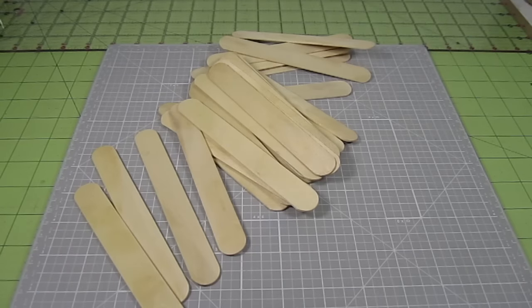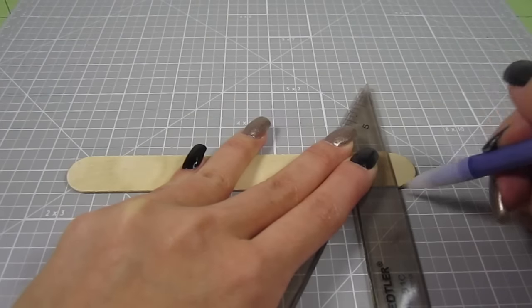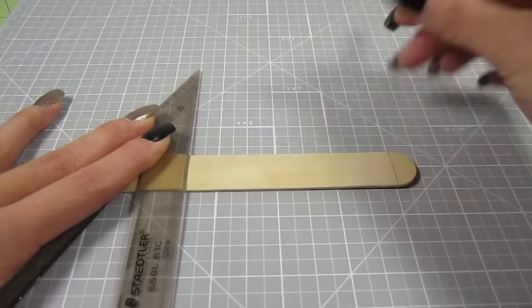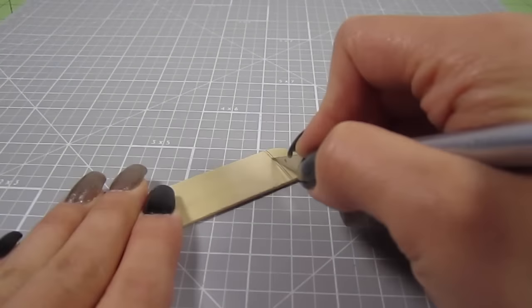The first thing I do is grab a handful of jumbo popsicle sticks. Draw two lines to create a 3.5 inch section. This will be the length of our shelves. Cut that out.